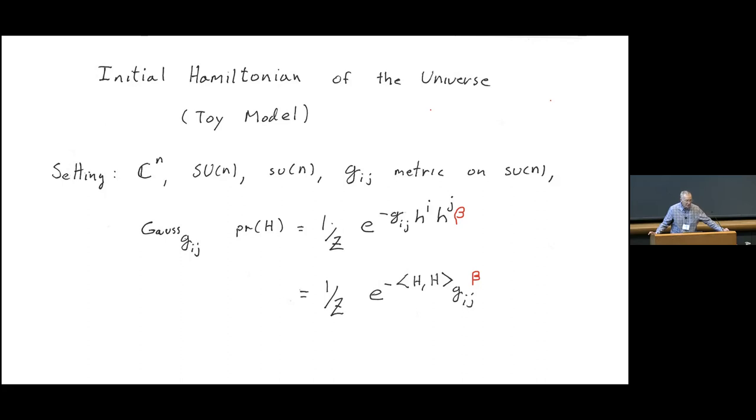So the setting is, we have a finite dimensional Hilbert space, C^n, where that very little n should be thought of as an enormous number. And we have its group of symmetries, the unitary group, SU(n), simple Lie group. And we have its Lie algebra, the infinitesimal symmetries, little su(n).